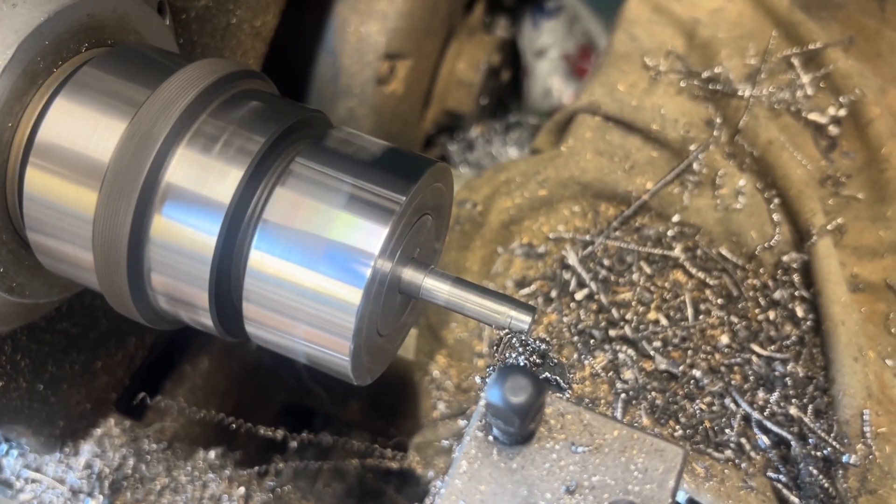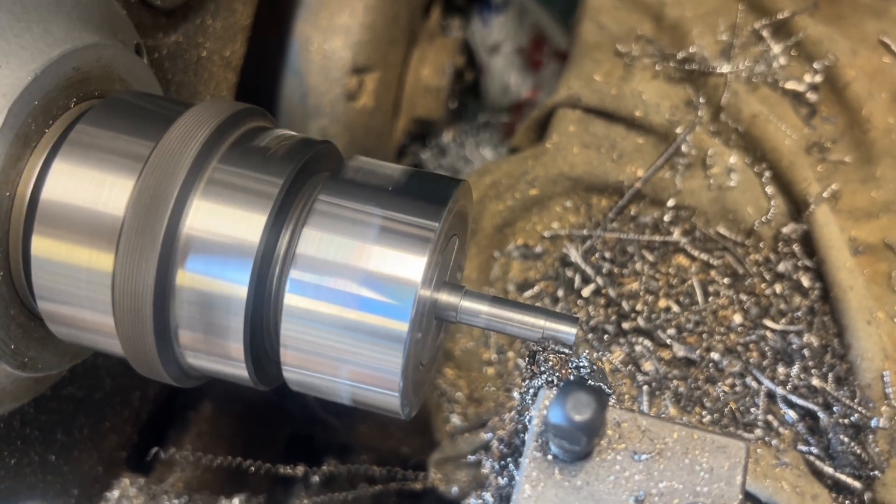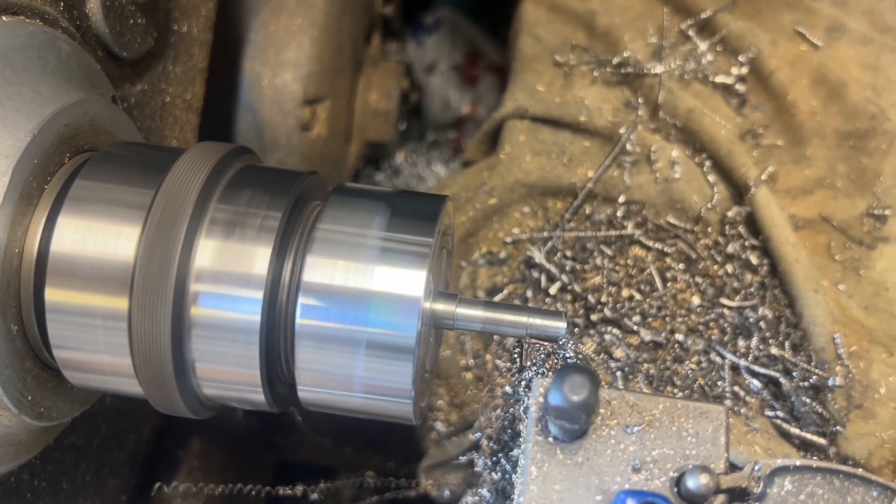In this video we're going to make a pinion for the teakip clock. We started with some EN8 steel and began to machine the pinion to size.